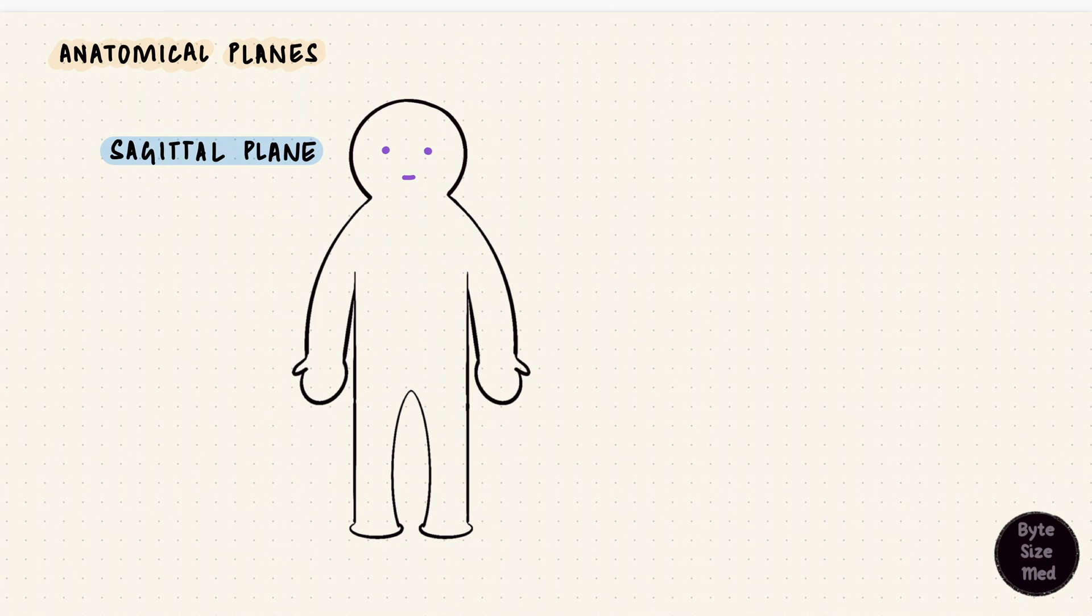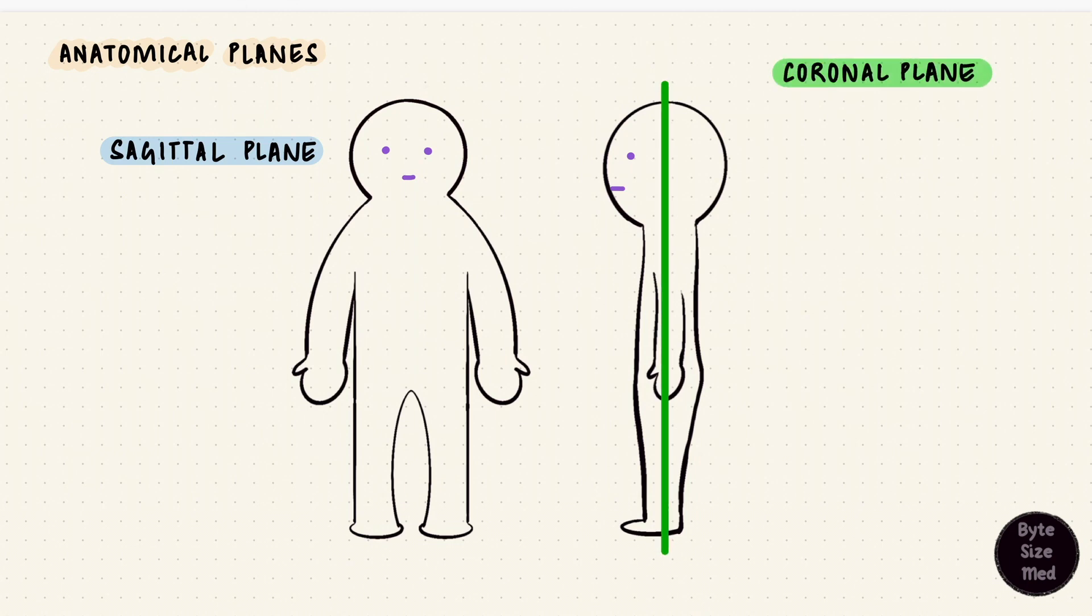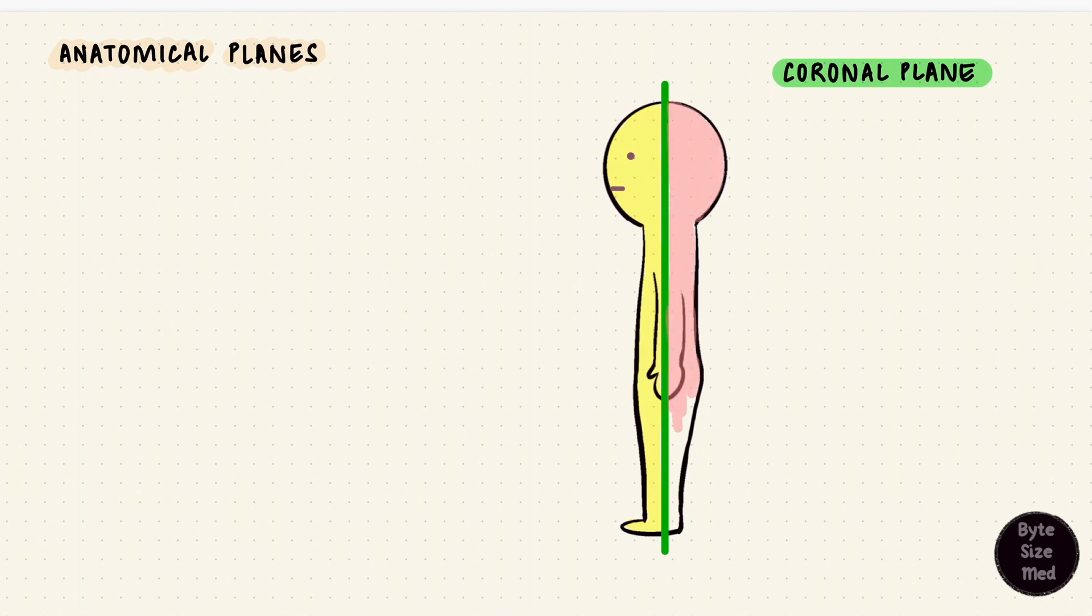The coronal plane or the frontal plane is a longitudinal plane as well in the direction of head to toe, but perpendicular to the sagittal plane. It splits the body into a front part and a back part. We use the terms anterior for front and posterior for back. Again, this plane doesn't have to split it in halves as long as it goes in this direction. It's the coronal plane or the frontal plane.